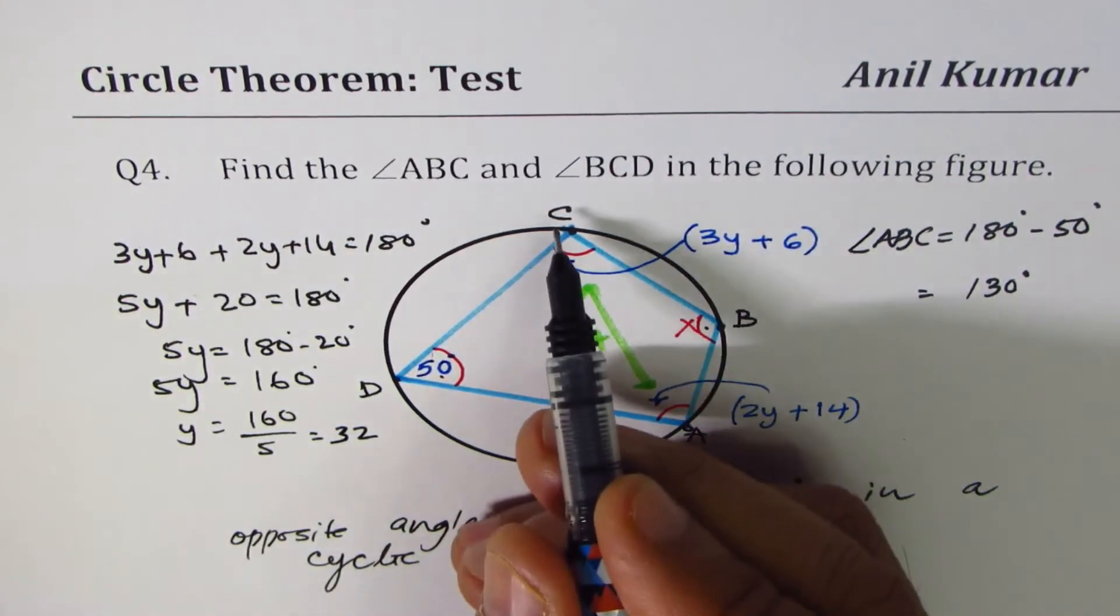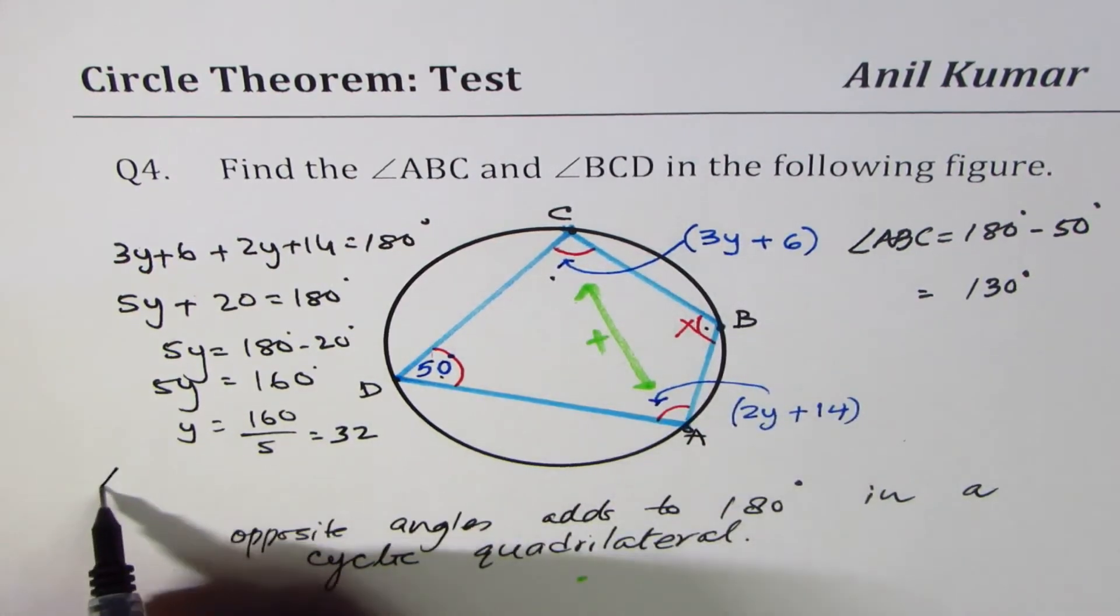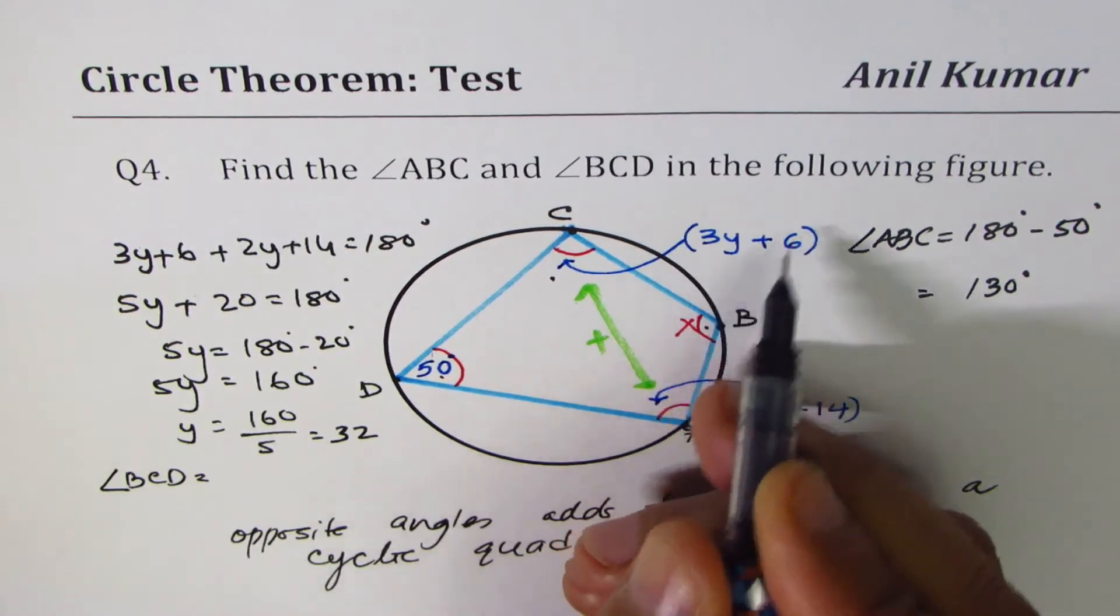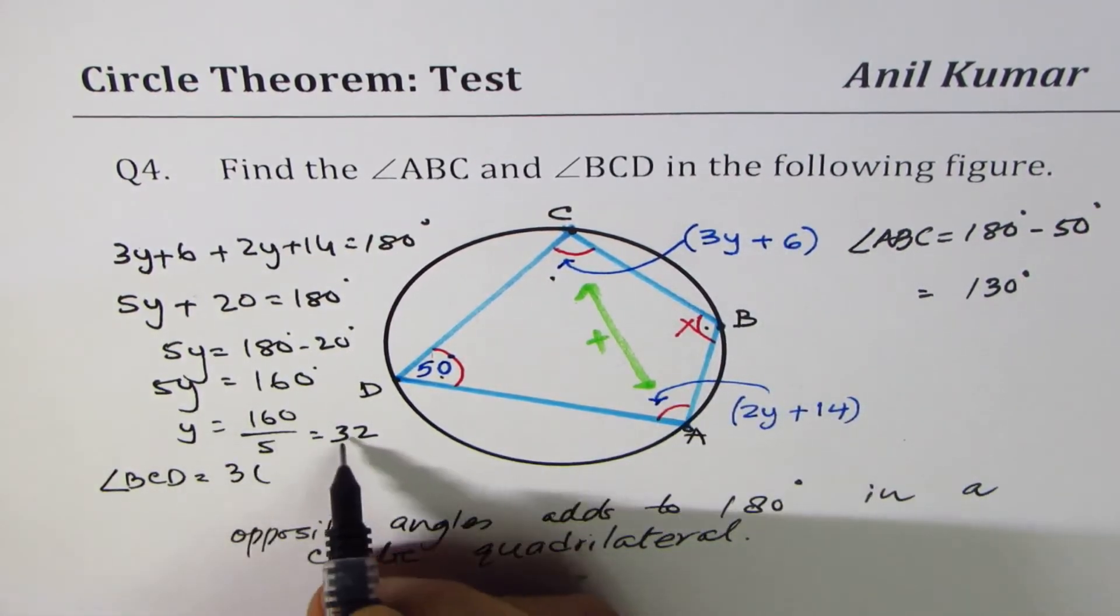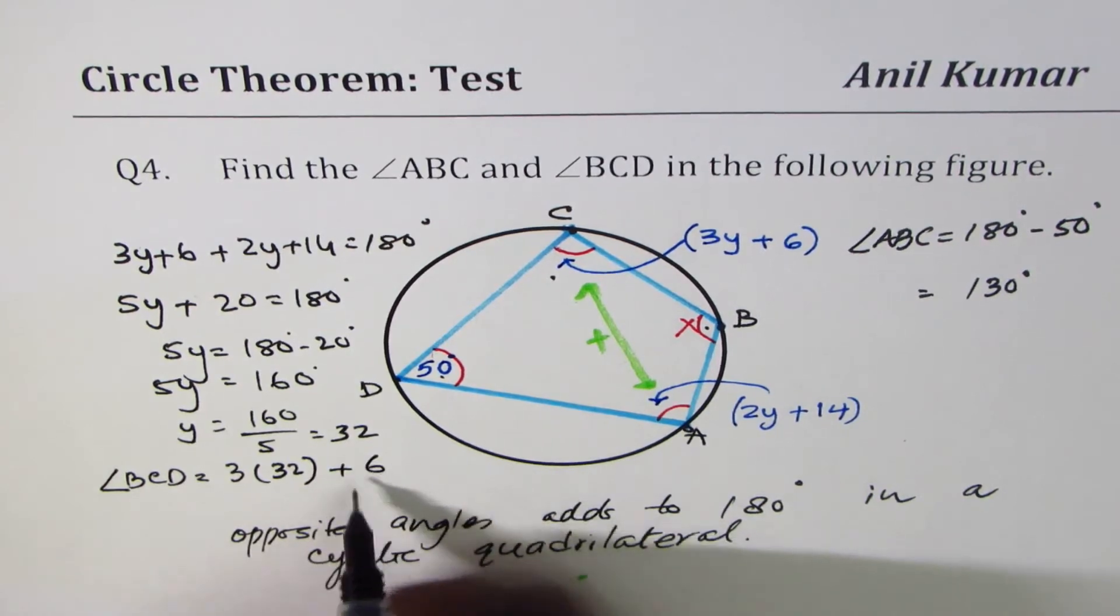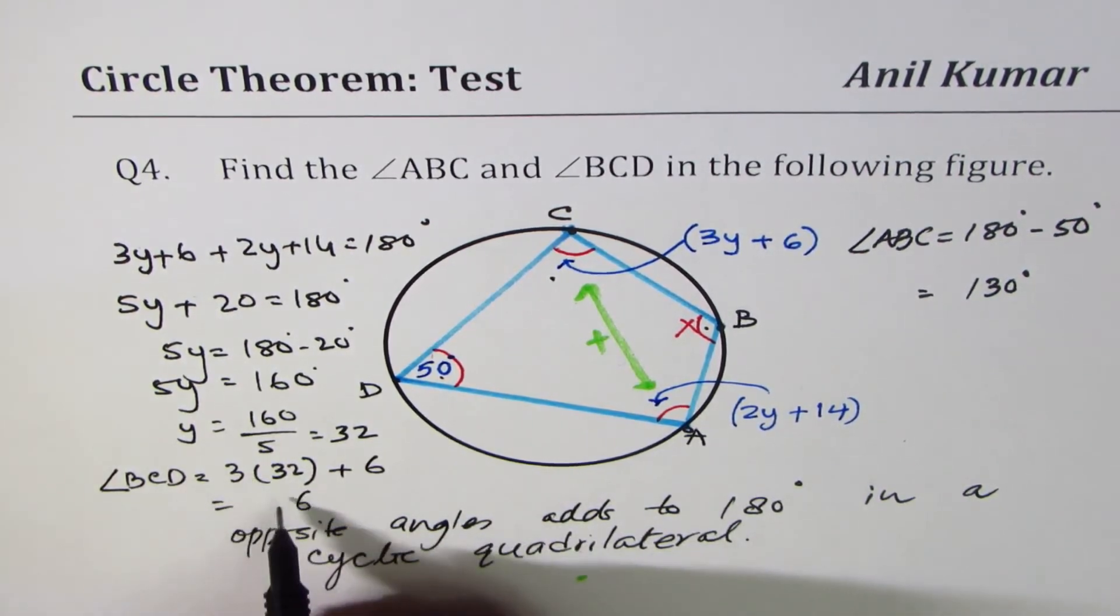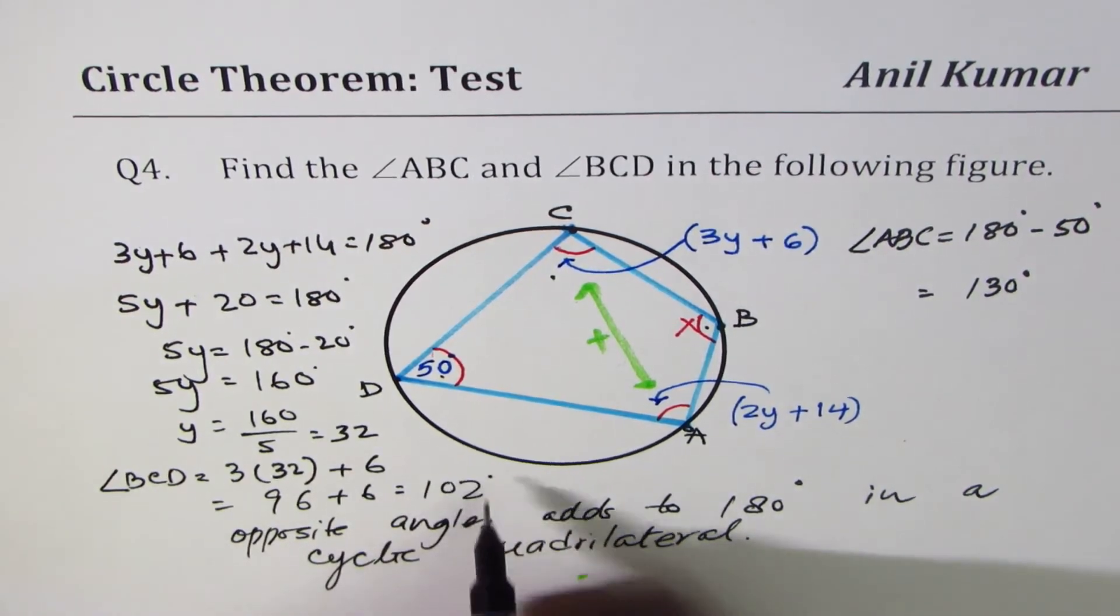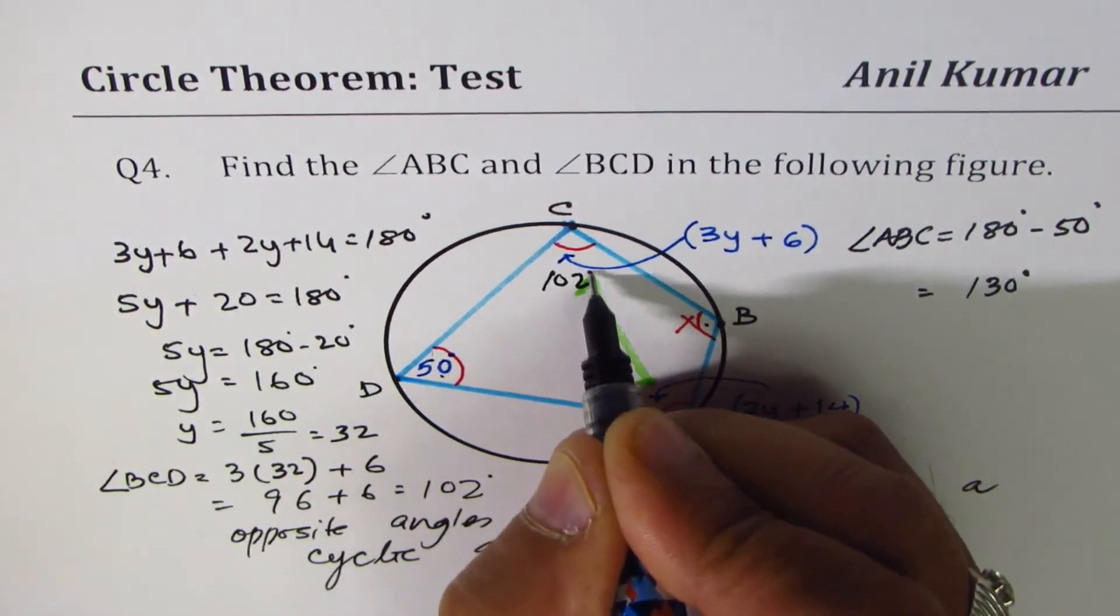We need to find angle C here which is angle BCD. 3y plus 6. 3 times y is 32, plus 6, and that gives you 96 plus 6. So this is 102 degrees.